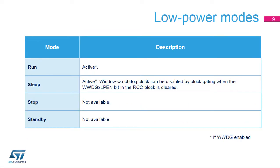The window watchdog is active in run and sleep modes. It is not available in stop or standby modes. In sleep mode, the window watchdog clock can be disabled by clearing the corresponding low-power enable bit located in the RCC block.